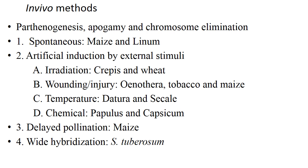The first is spontaneous induction; examples are maize and linum. The second is artificial induction by external stimuli. There are four external stimuli: irradiation, wounding, temperature, and chemical. Through irradiation we can get haploid plants in crops and wheat. By wounding or injury: Oenothera, tobacco, maize.